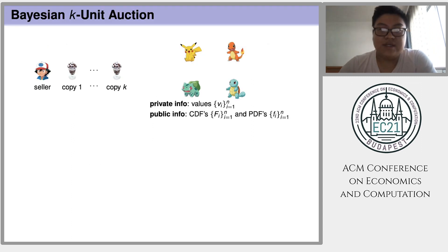We will consider a canonical Bayesian revenue maximization setting. Here, the seller has k copies of a single item and faces n potential buyers. Each buyer has a value VI for the item, and we assume that this value VI is private information of the buyer himself.